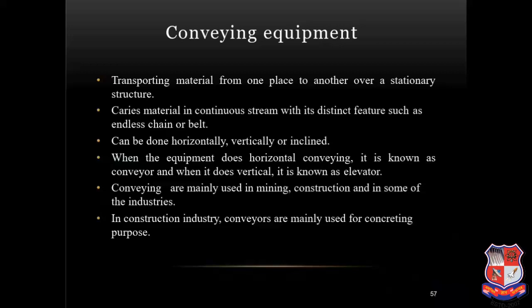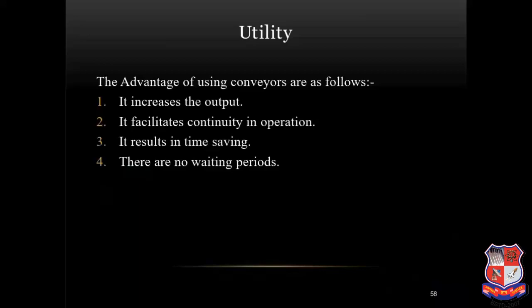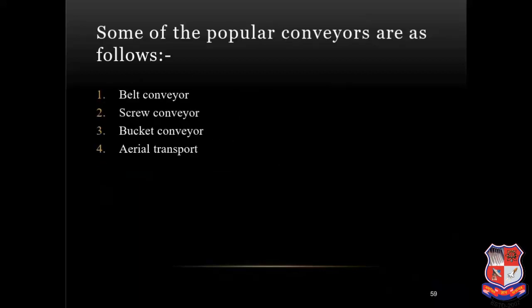Conveying equipment transports material from one place to another over a stationary structure, carrying material in a continuous stream using an endless chain or belt. It can be done horizontally, vertically or inclined. When the equipment does horizontal conveying, it is known as a conveyor; when it does vertical conveying, it is known as an elevator. Conveyors are mainly used in mining, construction and some industries. In construction, conveyors are mainly used for concreting purposes. Advantages include increased output, continuity in operation, time saving, and no waiting periods. Some popular conveyors are: belt conveyor, screw conveyor, bucket conveyor and aerial transport.